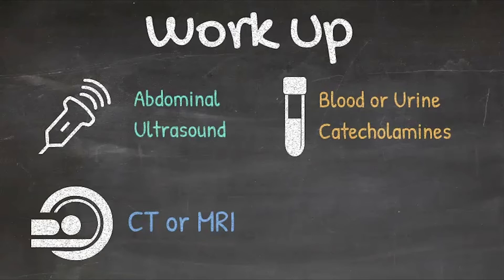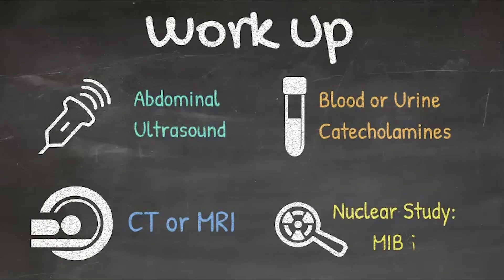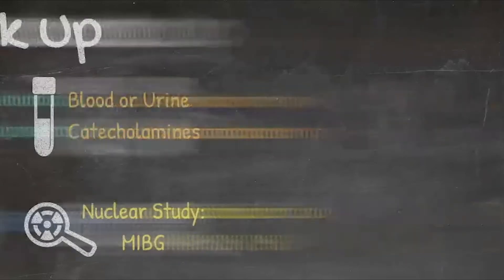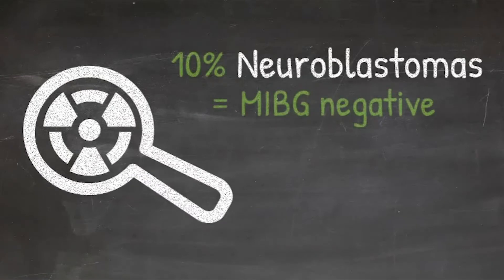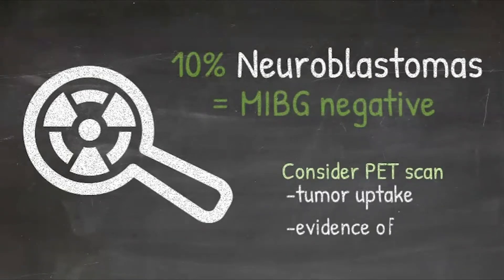If those studies suggest a neuroblastoma — that is, either a central abdominal mass or adrenal mass rather than, for example, a kidney mass — then the next test would be a nuclear medicine study, typically an MIBG study. The MIBG study is helpful for confirming the diagnosis of neuroblastoma and also can demonstrate metastatic disease. An MIBG is not 100% accurate; about 10% of neuroblastomas are MIBG negative. Some centers, including ours, would get a PET scan looking for tumor uptake as well as potential metastatic disease.